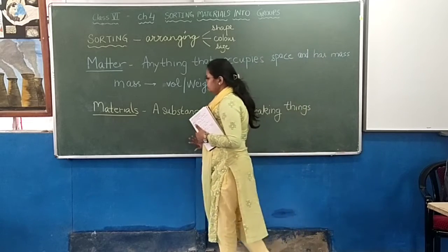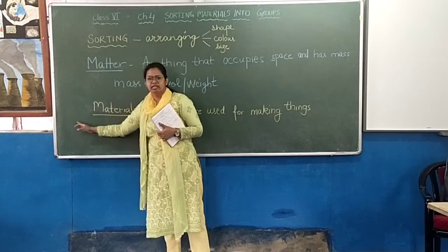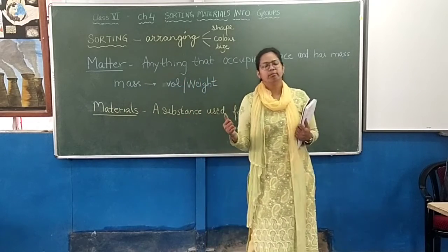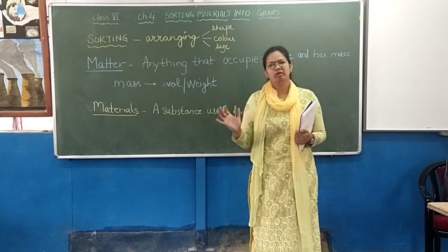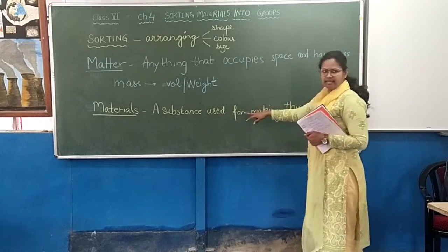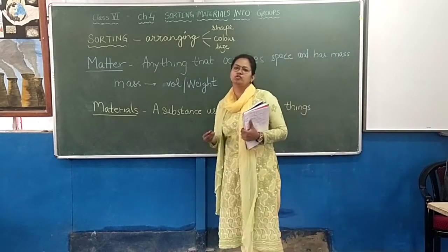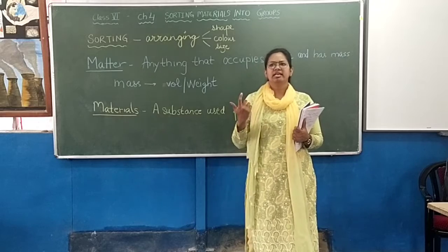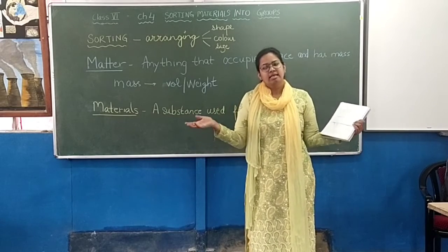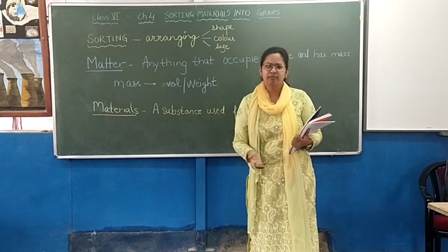Now, all the matter that is around us is made up of materials. We are surrounded by objects. So what is a material? Material is a substance used for making things. Any substance used for making things — it can be one substance, two substances, or more than three substances together making one thing — which we already discussed in the previous video.